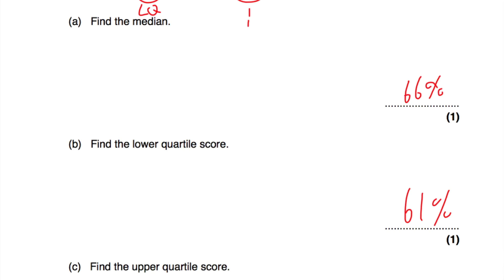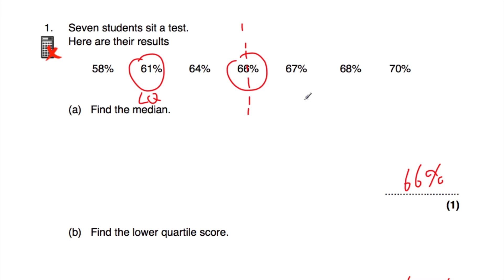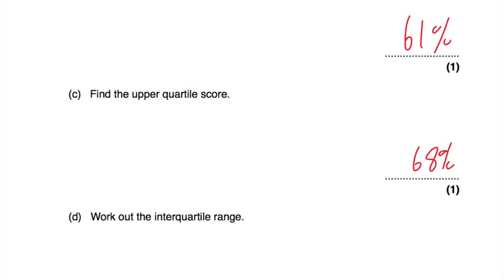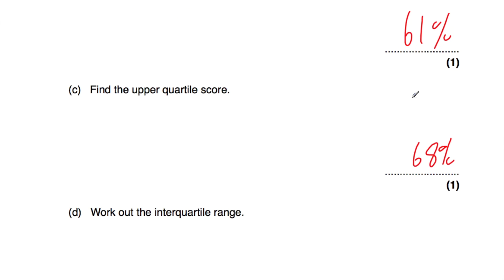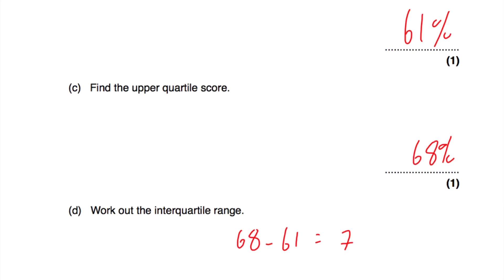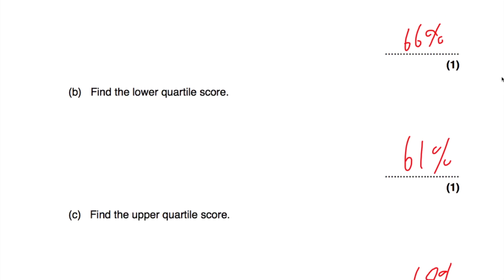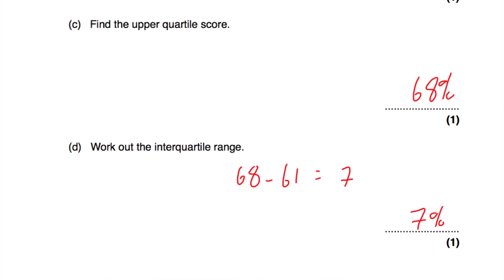Part C says find the upper quartile score. Here's the upper 50% of the data, so we find the middle of that — that's 75% of the way through the data. So the upper quartile is 68%. Then part D says find the interquartile range — that's the difference between the upper and lower quartile. So 68 take away 61 is equal to 7. The interquartile range is 7%. We've found the median, lower quartile, upper quartile, and interquartile range.